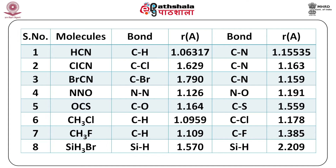A table of molecular data determined by microwave spectroscopy is presented. For molecules like HCl, the bond lengths are 1.06317 and 1.15535 Angstroms. For other molecules including those containing Cl and Br, bond lengths such as 1.629, 1.163, 1.790, and 1.159 Angstroms are provided, along with various data for other molecules.